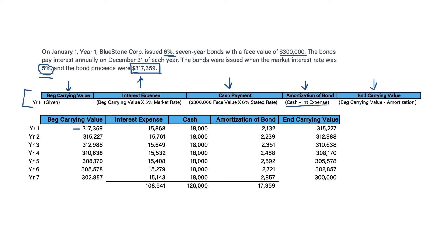Starting with the initial carrying value, Year 1 interest expense is $15,868 — that's $317,359 times 5%. The cash payment is $18,000. So in Year 1, the bond premium is amortized by $2,132, decreasing the carrying value from $317,359 down to $315,227.